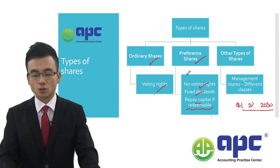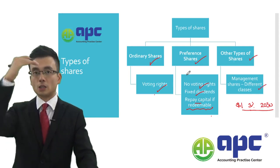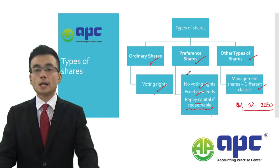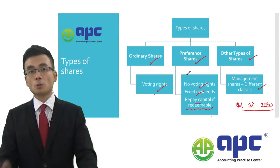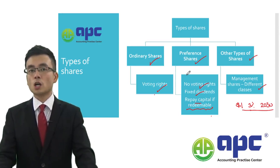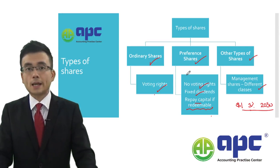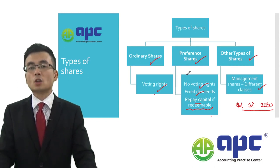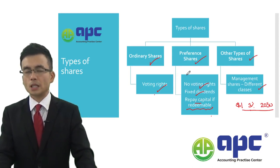A business may also issue other types of shares in different classes — for example, Class A, Class B, and Class C — with different voting rights. Different types of shares may also be issued to employees to motivate them or to retain them, but they may carry no voting rights or perhaps some voting rights, depending on how the company regulates this in a contract.